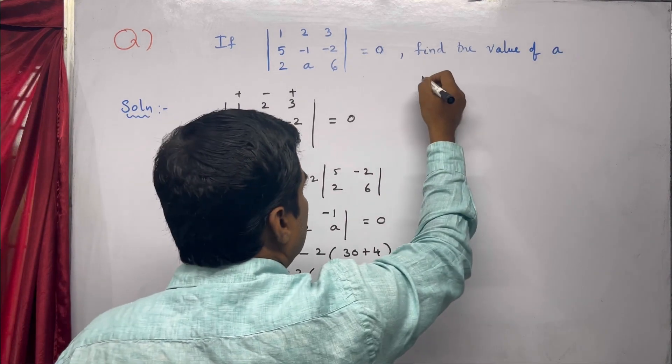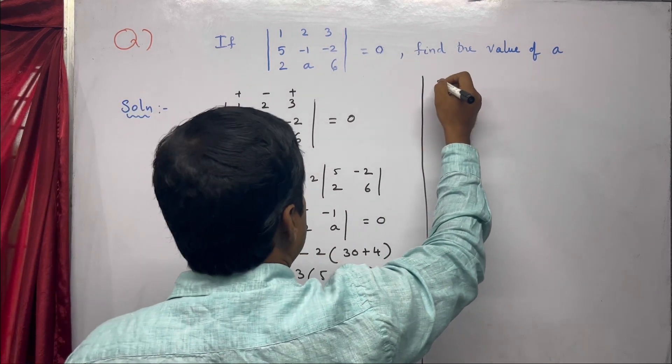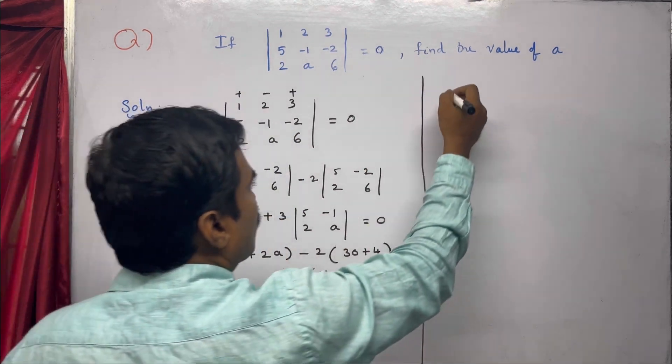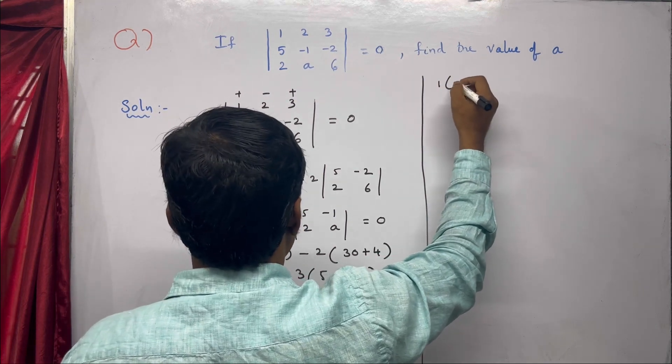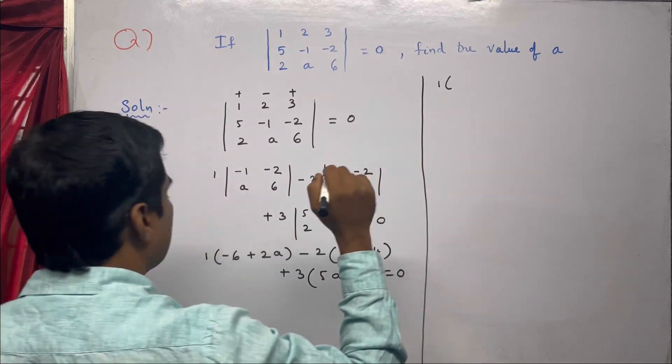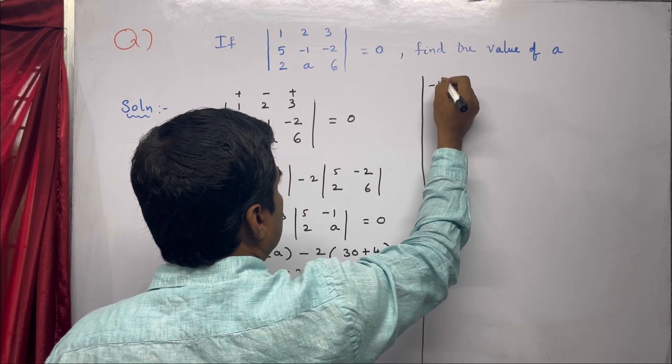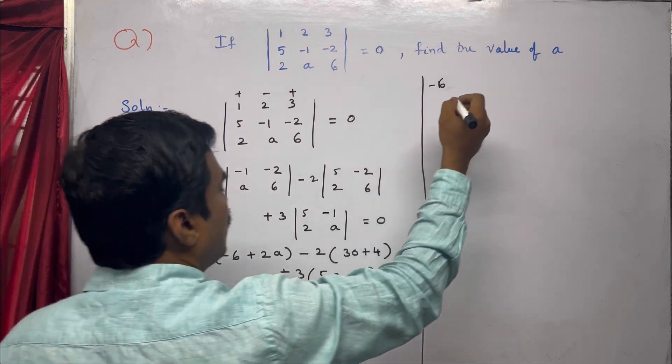Now let's simplify. We will multiply out the terms. The first term is 1 times (-6 + 2a), which gives -6 + 2a.